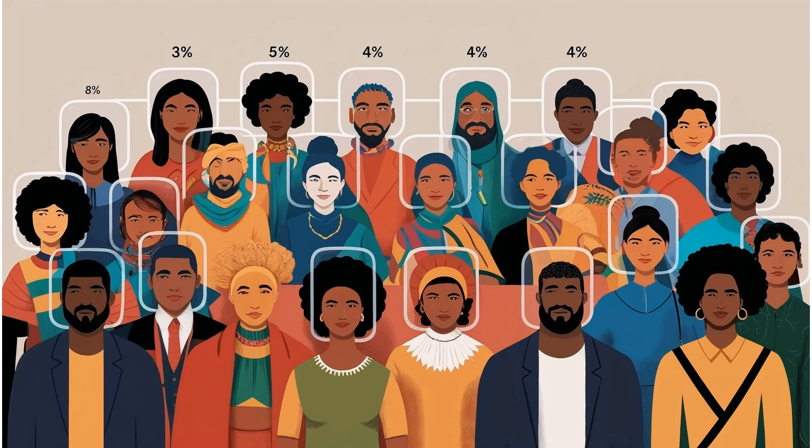For example, if a population consists of 40% males, 55% females, and 5% transgender people, the researcher ensures that the sample has the same proportional representation. By ensuring that all relevant subgroups are proportionally represented, stratified sampling helps researchers avoid over-representing or under-representing certain groups.